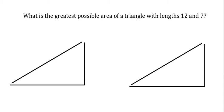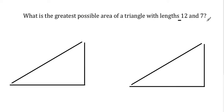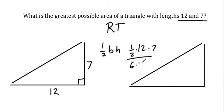The simplest answer here is that the greatest possible area is when there is a right triangle. I'll demonstrate it to you real quickly. If I'm given the sides 12 and 7, and I have a right triangle, then that's one half the base times the height. That's one half of 12 times 7, which is 6 times 7, which is 42. So the area of this triangle is 42.